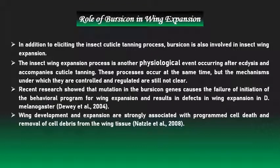Another important function of Bursicon in insects is wing expansion. The insect wing expansion process is another physiological event occurring after ecdysis and accompanies cuticle tanning. These processes occur at the same time, but the mechanisms by which they are controlled and regulated are still not fully clear. Recent research shows that mutation in the Bursicon genes causes failure of initiation of the behavioral program for wing expansion and results in defects in wing expansion in Drosophila melanogaster. Wing development and expansion are strongly associated with programmed cell death and removal of cell debris from the wing tissue.